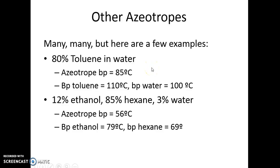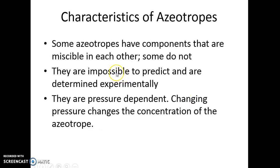There are many other azeotropes — for example, toluene and water, or a combination of 12% ethanol, 85% hexane, and 3% water. I just want you to understand the idea of an azeotrope; I'm not going to expect you to memorize all those things. Azeotropes are always determined experimentally, which is why you would look up information in a handbook. They are pressure-dependent, and as you change the pressure, the concentration of the components in the azeotrope will change.